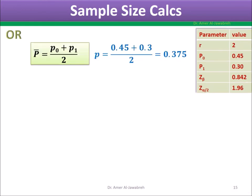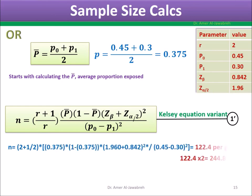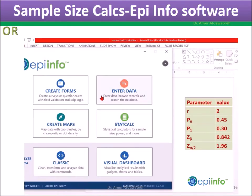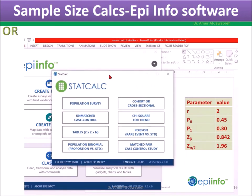The Kelsey equation variant starts with calculating P-bar, the average proportion exposed. The example is also calculated using epi-info software for verification.